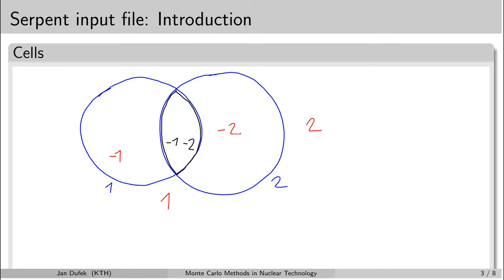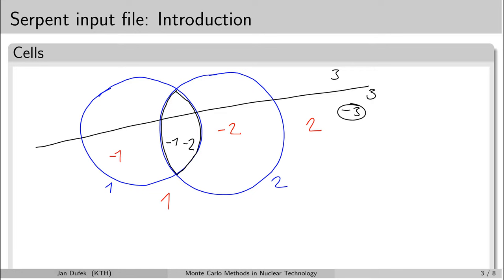We can also intersect more than two spatial regions. Let's say we have a plane here, number 3 — the space below is minus 3 and the space above is plus 3. If we wanted to create a cell with a half-disk shape, we intersect the spatial region minus 1 minus 2 with the spatial region 3, and we would write that as minus 1 minus 2 and 3.